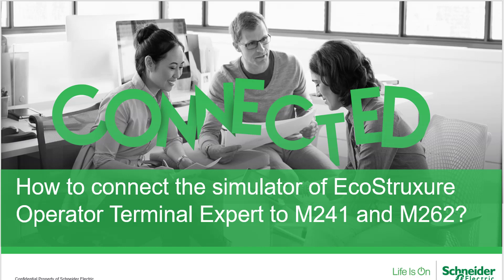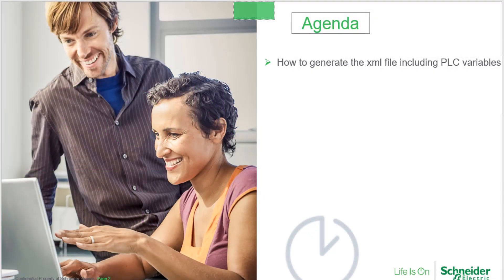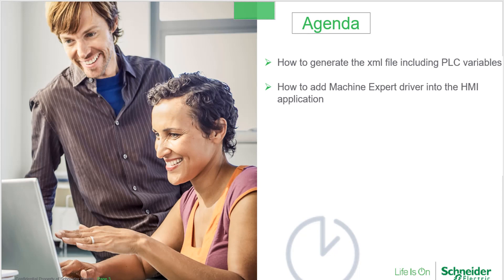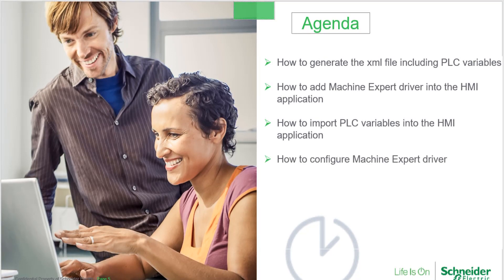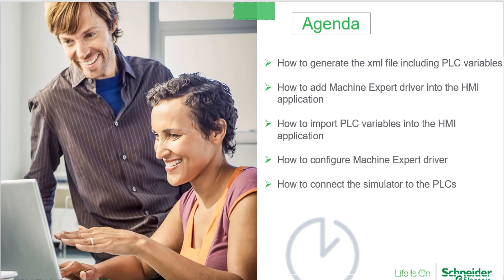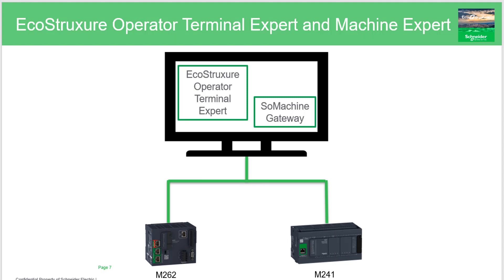The goal of this video is to show how to connect the simulator of EcoStruxure Operator Terminal Expert to M241 and M262. A few steps are required to connect the HMI simulator to the PLC. We will first generate an XML file including PLC variables, then add a Machine Expert driver into the HMI application, import PLC variables, configure the driver, and finally connect the simulator to the PLCs. EcoStruxure Operator Terminal Expert and SoMachine Gateway are running on the same PC.